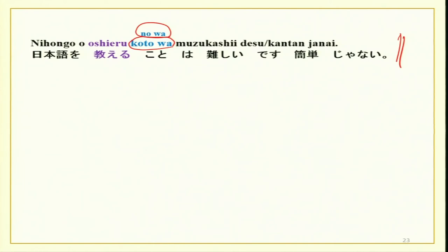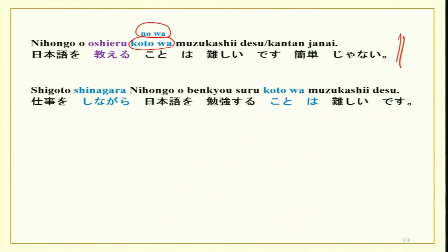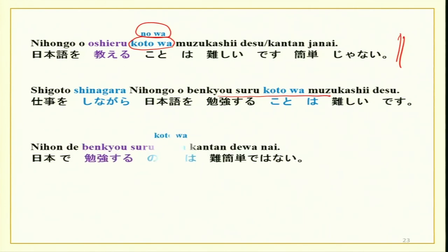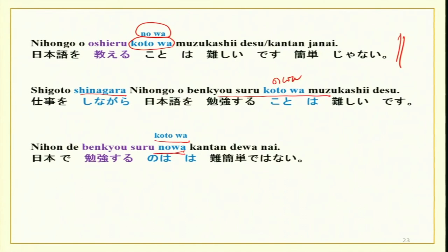With koto wa it is a general observation, whereas with no wa the speaker expresses feelings more strongly and conveys involvement or experience about what he is talking. With koto there is no such involvement — it is just an observation. Oshieru koto wa muzukashii desu — just a statement. Oshieru no wa muzukashii desu — over here the speaker is saying I have experienced this. Shigoto shinagara Nihongo wo benkyo suru koto wa, or benkyo suru no wa, muzukashii desu. Nihon de benkyo suru koto wa kantan dewa nai — it is very difficult to study in Japan. Nihon de benkyo suru no wa kantan dewa nai. The reasons could be expensive tuition, living costs, not knowing Japanese, or not liking the food.